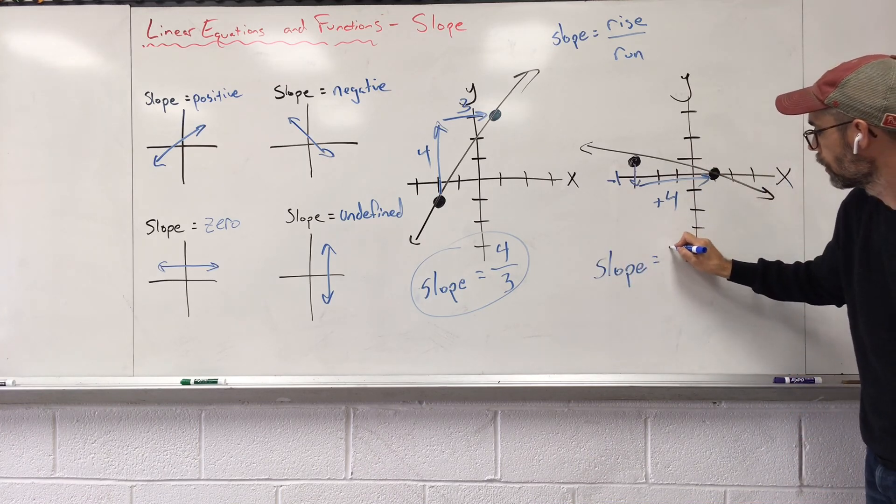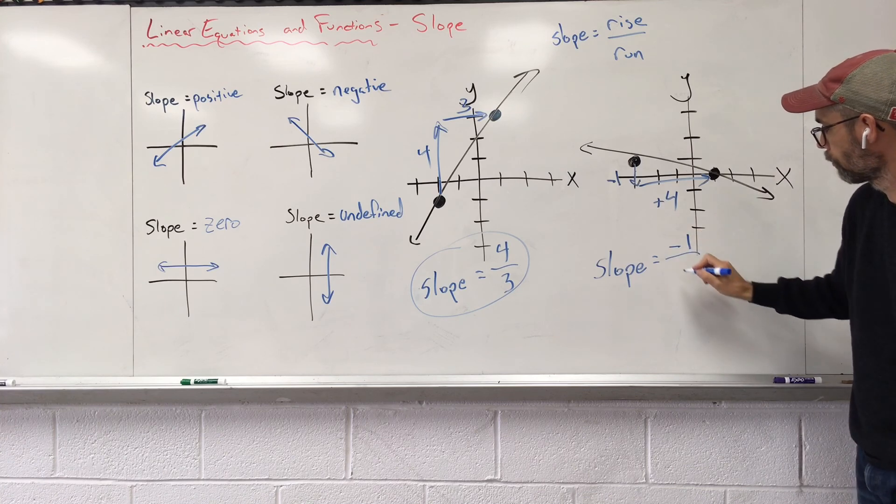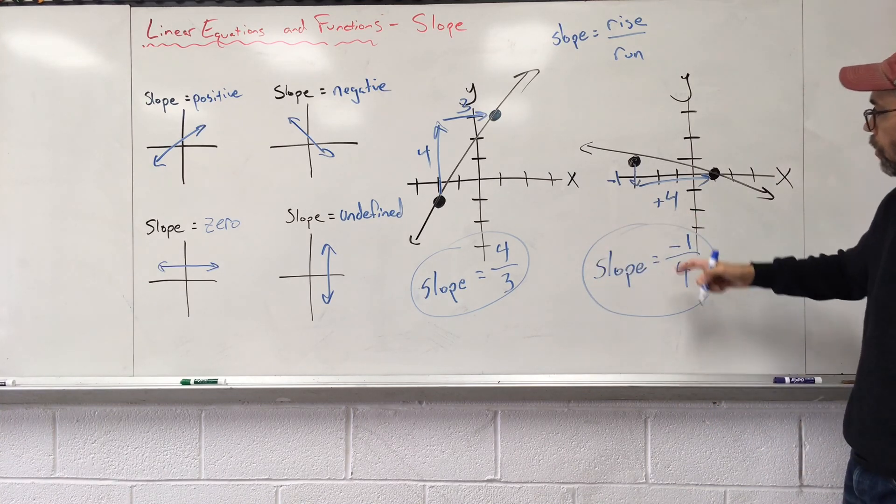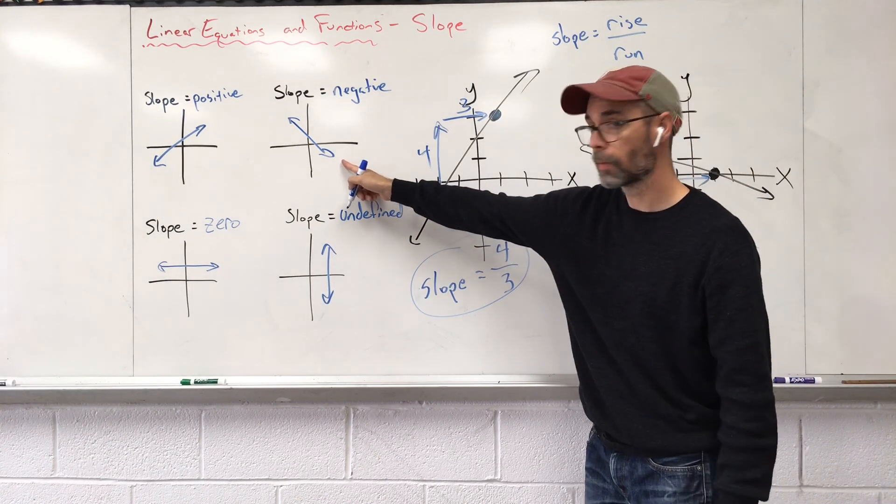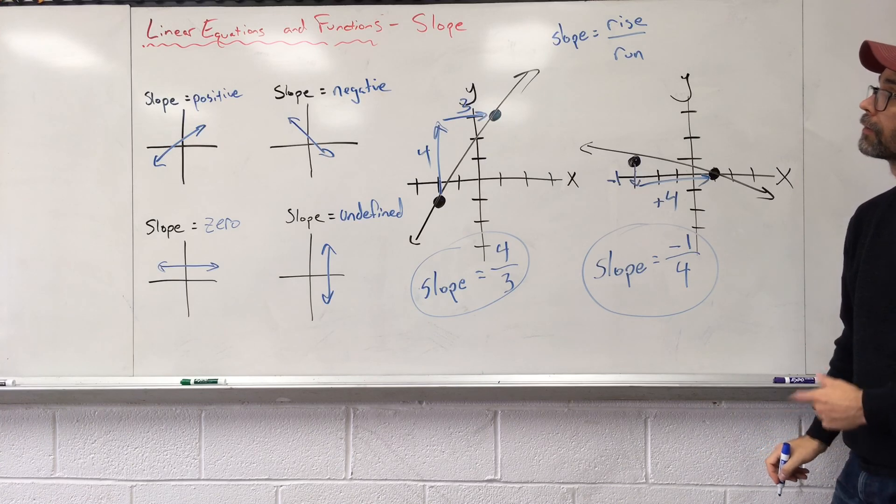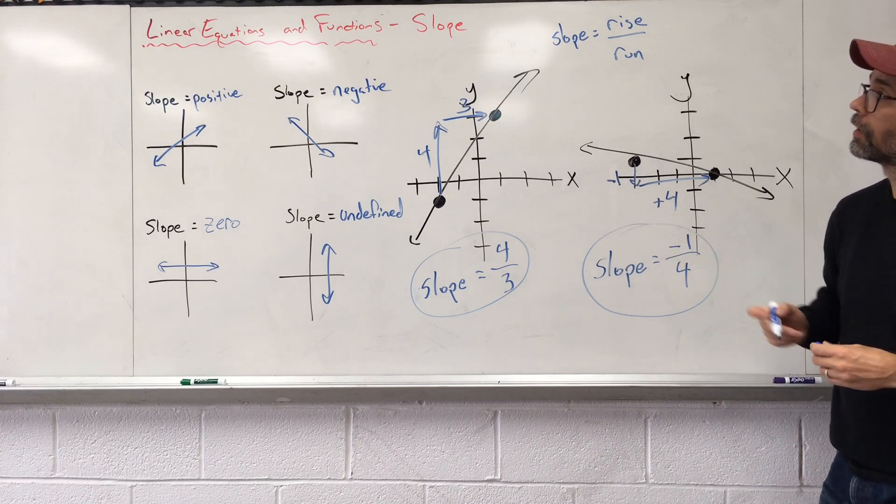Our rise and run, we rose negative one, we ran four. Your slope is negative one-fourths. We said our original graph was going to be negative because it looked like that. We came up with a negative, and that's finding slope given graphs.